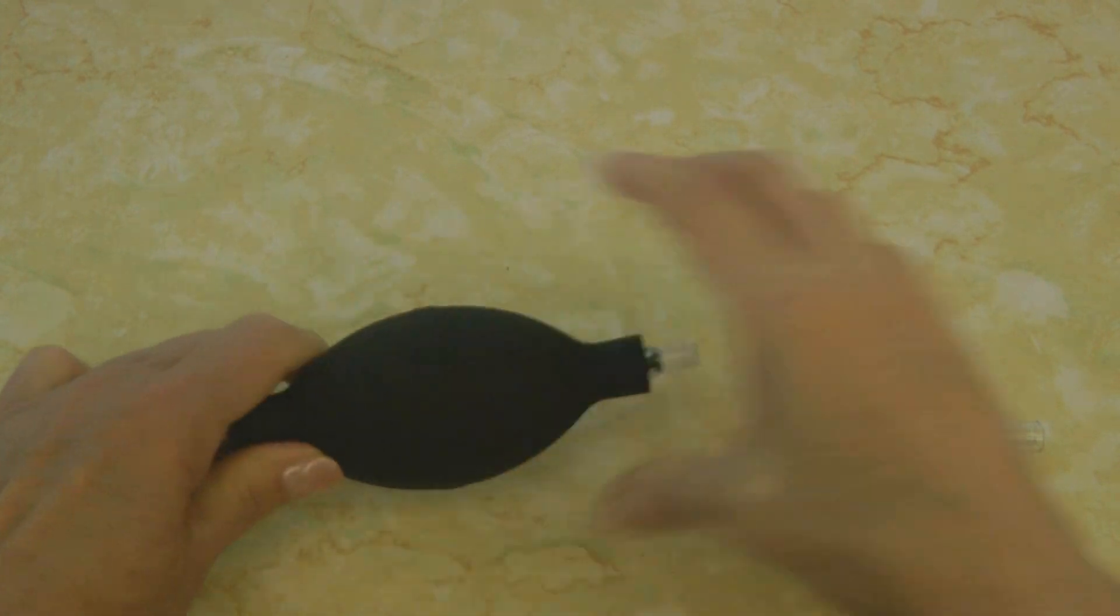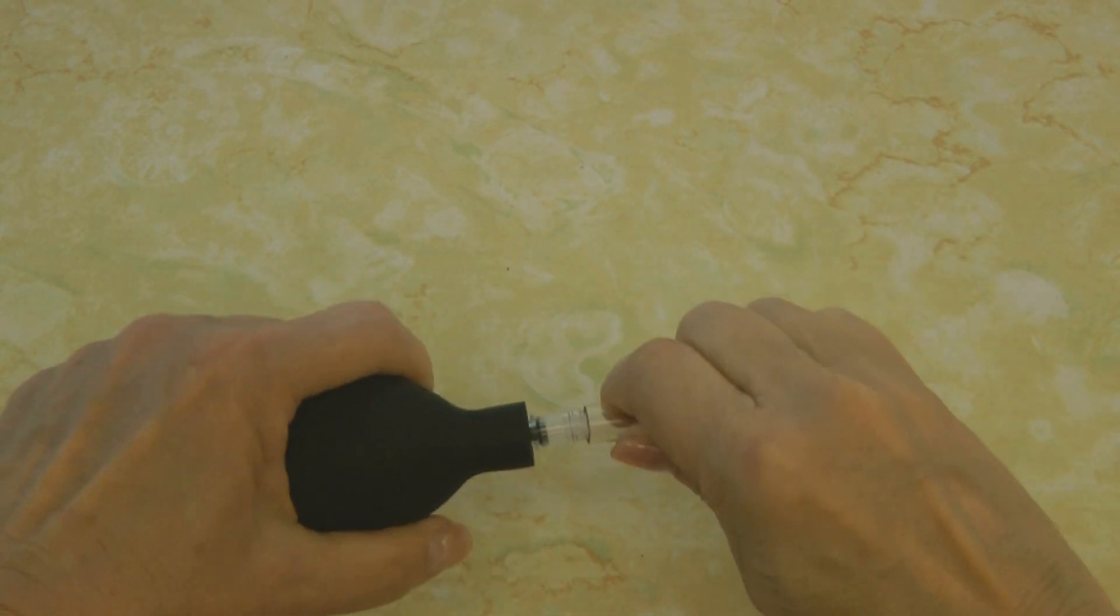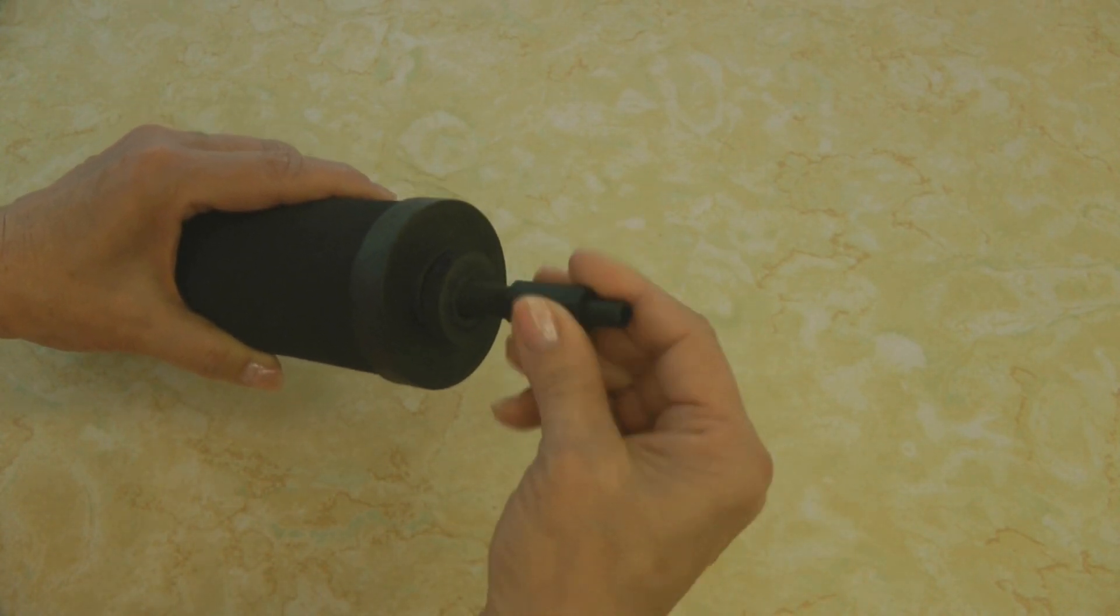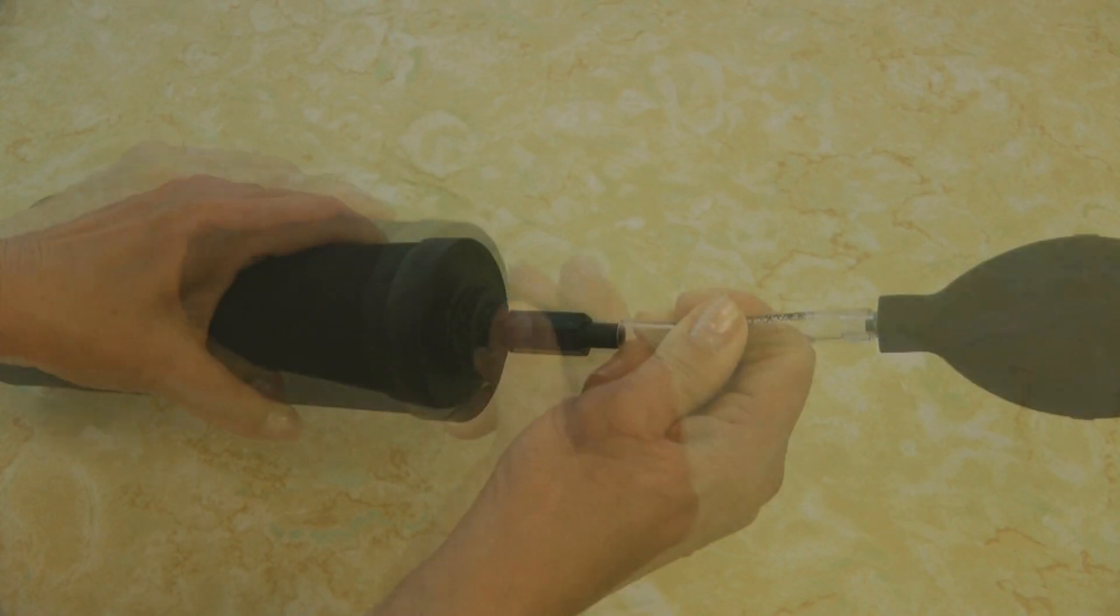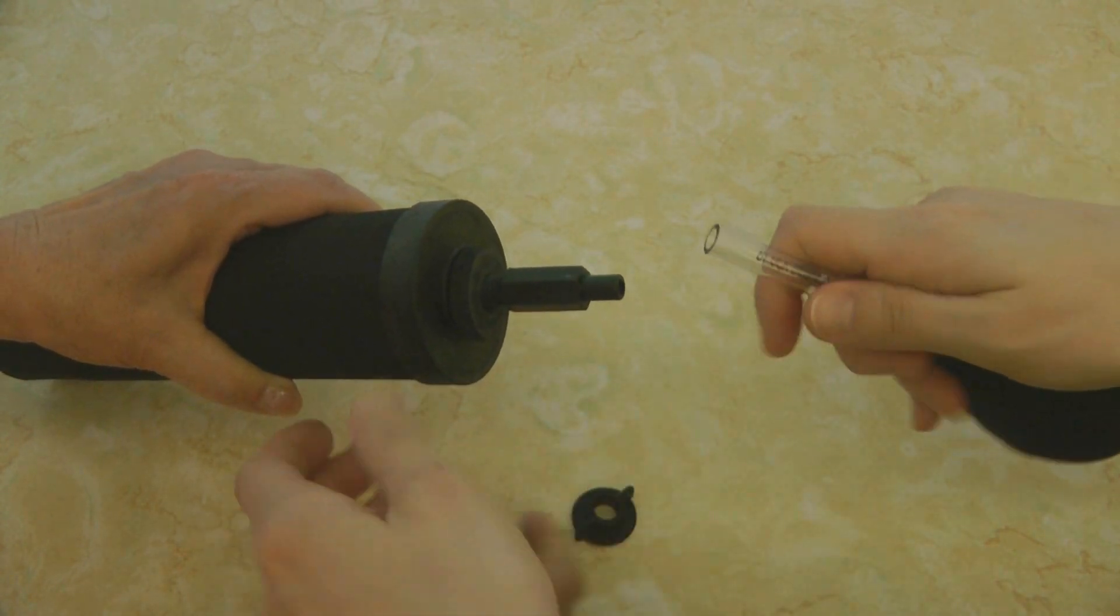Then you're going to attach it to your black Berkey filter. Attach the hex nut to the black Berkey filter and then your primer. You want to make sure that the valves are pumping away from the black filter.